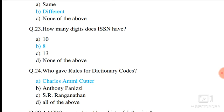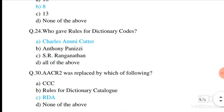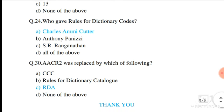Question number 23. How many digits does ISSN have? ISSN has eight digits, whereas ISBN has thirteen digits. Question number 24. Who gave the rules for dictionary codes? Option A is correct — Charles Ammi Cutter.